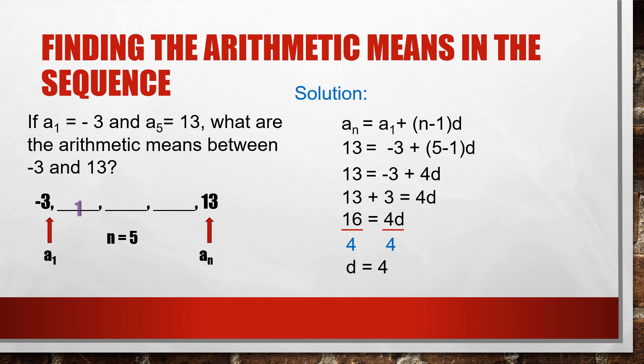Negative 3 plus 4 is 1, and 1 plus 4 is 5, and 5 plus 4 is 9. Thus, the arithmetic means between negative 3 and 13 are 1, 5, and 9.